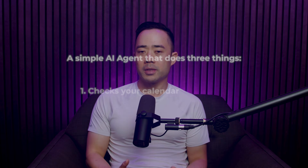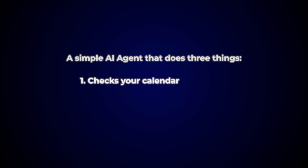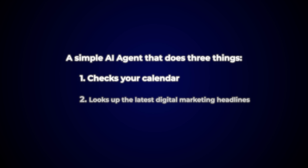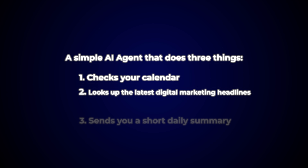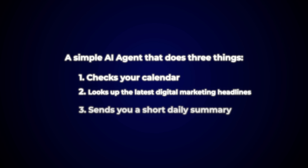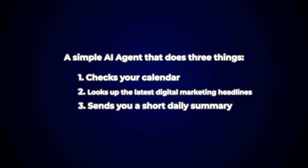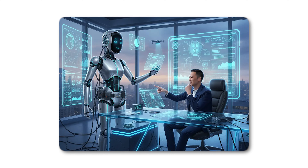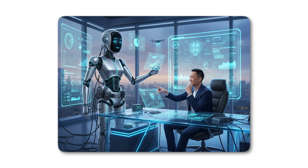Here's what we're building together: a simple AI agent that does three things. One, it checks your calendar. Two, it looks up the latest digital marketing headlines. And three, it sends you a short daily summary all on its own. Think of it as your personal digital assistant that actually thinks before it acts. The point of this super simple tutorial is for you to understand how easy it can be to build a working agent.